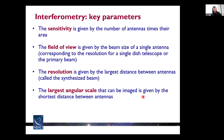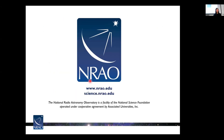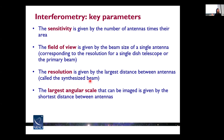As a final review of key parameters in radio interferometry: sensitivity is given by the number of antennas times their area, which is the total collecting area of the telescope. The field of view is given by the beam size of a single antenna, called the primary beam size. Resolution is determined by the largest distance between antennas, and conversely, the largest angular scale is determined by the shortest distance. These parameters are all very important when proposing for ALMA observations — you need to specify the sensitivity, resolution, maximum angular scale, and field of view that match your science goals. This concludes the introduction to radio interferometry.